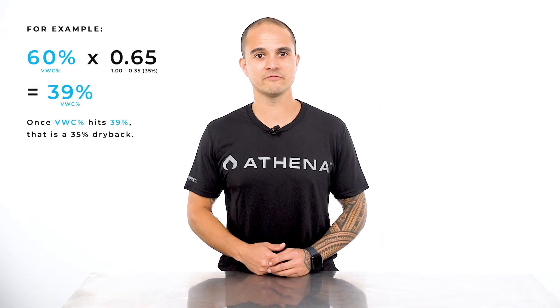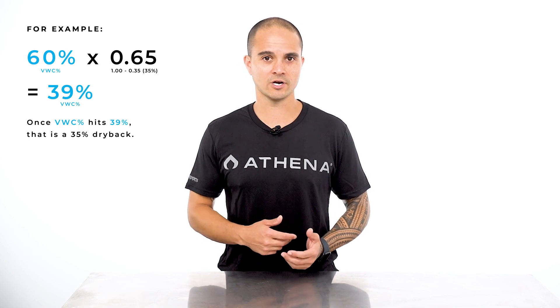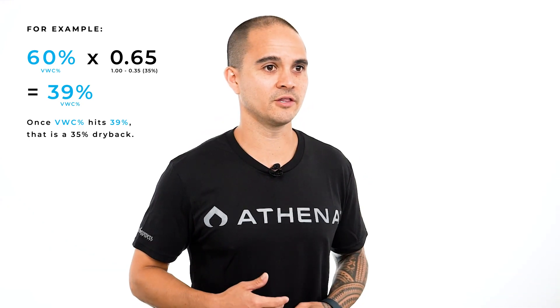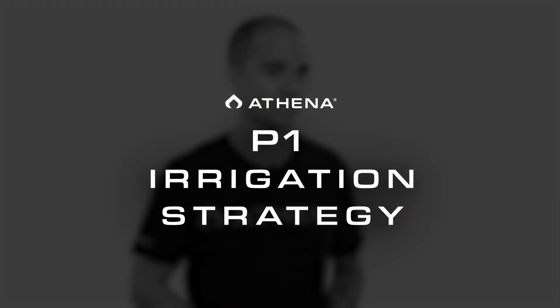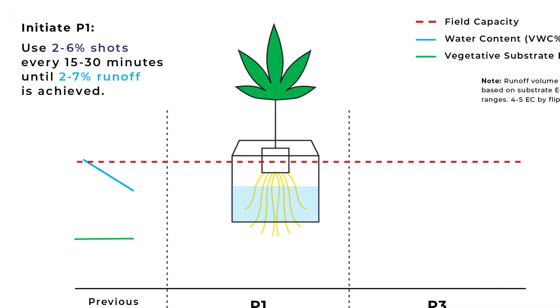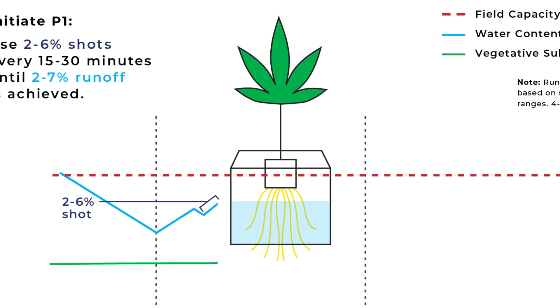To calculate your dryback, take your VWC percent at the point of runoff and multiply by 0.65 to calculate a 35% dryback, or multiply by 0.6 to find a 40% dryback. This dryback is an example of a relative change. We calculate our dryback using a relative change because the decrease in VWC percent will be proportional no matter what the VWC is at field capacity. Once we achieve our 35 to 40% dryback, it is now time to start utilizing P1 irrigation events. When initiating P1, we want to make sure we have transpiration before irrigation. Our first shot should occur one to two hours after our lights turn on.